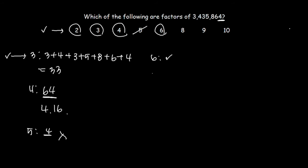Let's move on to 8. If the number formed by the last 3 digits is divisible by 8, then the number is divisible by 8. The last 3 digits is 864. Is this number divisible by 8?